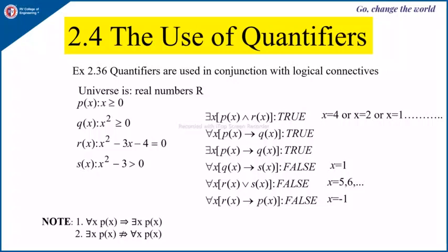Let r(x) be x² − 3x − 4 = 0 and s(x) be x² − 3 > 0. Consider the quantified statement: there exists x such that p(x) and r(x). For x equal to 4, 2, or 1, both p(x) and r(x) are true. So the statement 'there exists x such that p(x) and r(x)' is true, because there exists at least one value of x for which both are true.